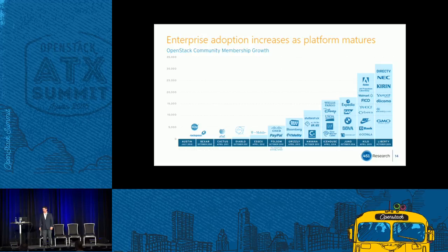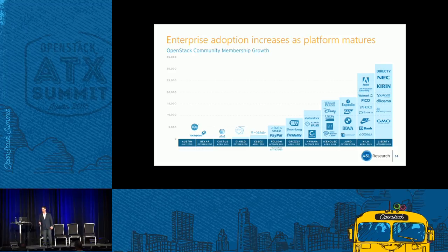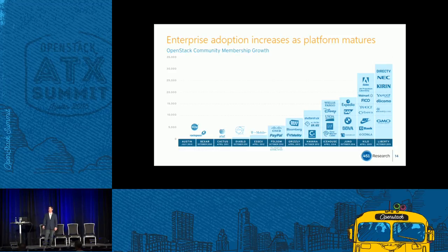Through Liberty, the community may now be over 50,000 members. A good test of success is when you have logos that your kids can recognize, and there are a lot of them here. For the Mitaka release, the first new logo I'm adding is Volkswagen. There's plenty of momentum here.